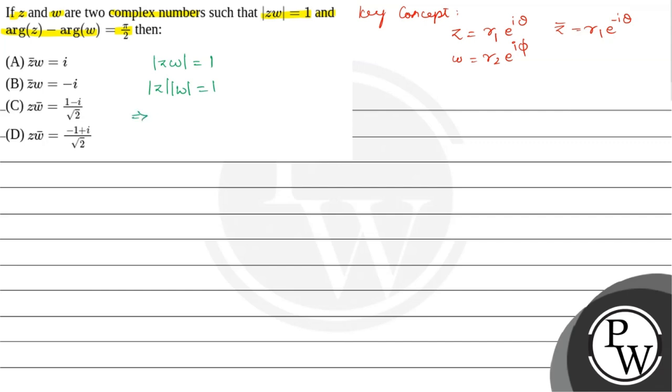Modulus of Z is modulus of R1 e power i theta, into modulus of W is R2 e power i phi, is equals to 1, which is equals to R1 R2 is equals to 1.